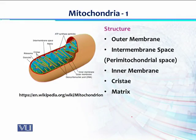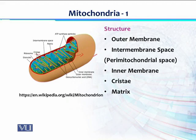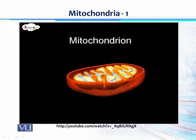The structure of mitochondria contains a double membrane system. There is an outer membrane which is smooth, and an inner membrane. Between the outer and inner membrane is a space called the intermembrane space or perimitochondrial space. The inner membrane has folds called cristae, and the fluid-filled space inside is called the matrix. So there are five components of mitochondria: outer membrane, intermembrane space, inner membrane, cristae, and matrix.